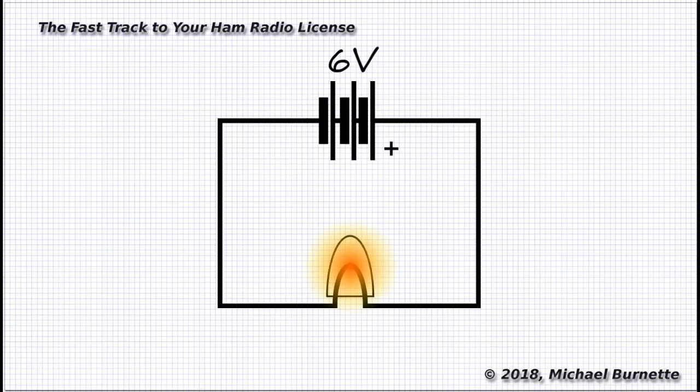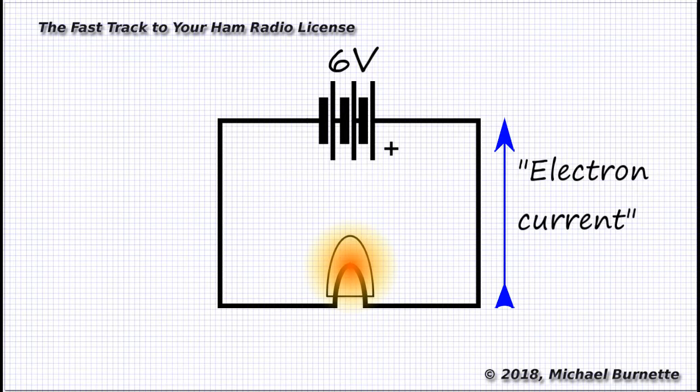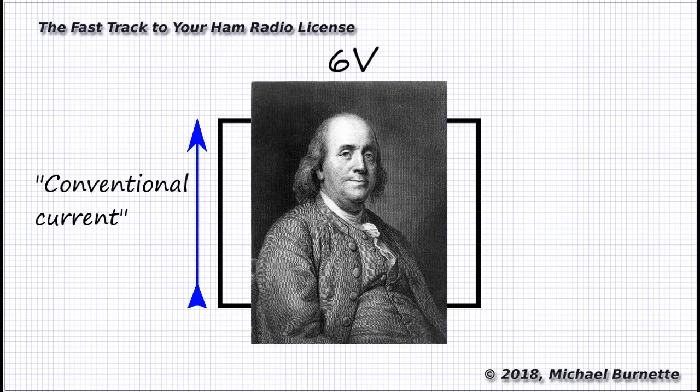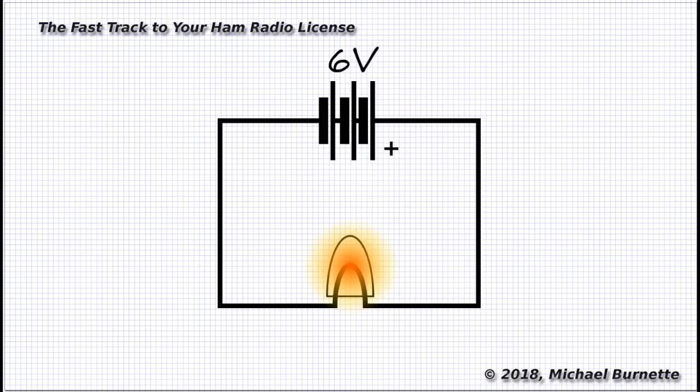By the way, kind of a side point, but one that will save you a lot of confusion over the years, I know your 8th grade science teacher told you that electricity flows from negative to positive. And that is the direction electrons flow. But in electrical engineering, when you're reading schematics, current flows from positive to negative. The way Ben Franklin intended it to.